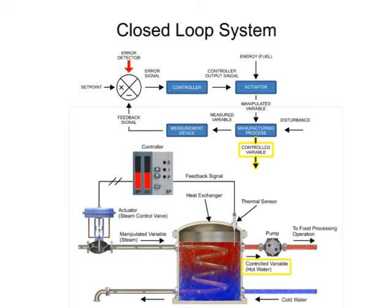The controlled variable is the actual variable maintained in the process. In this example, the controlled variable is the temperature of the water leaving the tank. Measured variable monitors the status of the controlled variable; water temperature is the measured variable in the process.